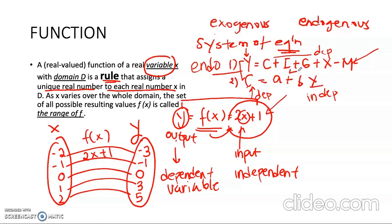So rather than using independent and dependent, we usually use exogenous and endogenous. The variables that are determined by the equations in the system — like y and c — are the endogenous variables. Although y is independent in the second equation, it is not exogenous. The exogenous variables are only i, g, x, and m, because c in the second equation is a dependent or endogenous variable. So endogenous variables are those determined by the equations in the system: y is determined by the first equation, c is determined by the second equation, while i, g, x, and m have no other equation defining them, so they are exogenous variables.